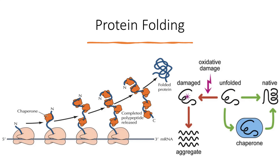Protein folding is another type of protein modification. After the protein is translated, there are two different types of protein folding: one done by itself, and another that needs a helper protein called a chaperone. Chaperones attach themselves to the newly translated protein and help it fold into the correct form.